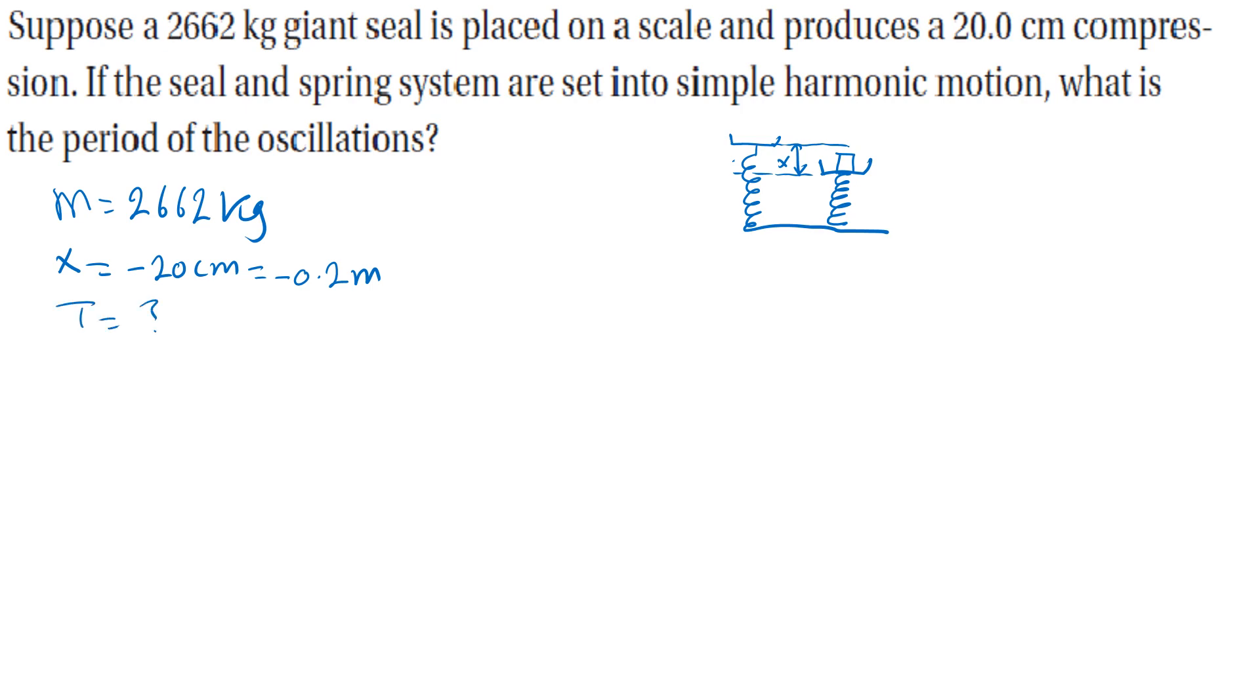To find the period we will use this formula: T equals 2π square root of M over K. The mass is given, 2π we know it, K is an unknown so we have to find K first.